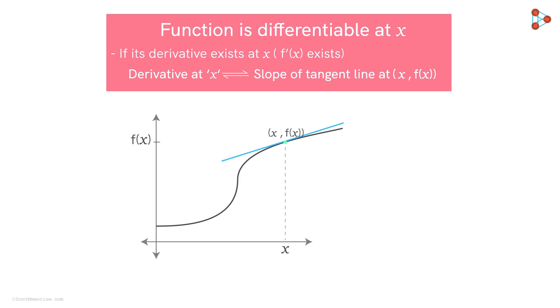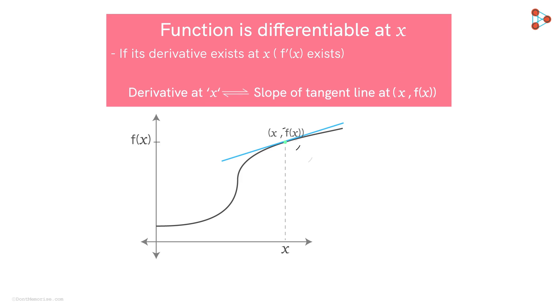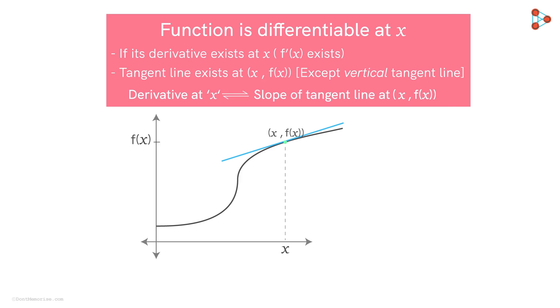So graphically, a function is differentiable at a point if a tangent line exists at that point on the curve, except only when it's a vertical tangent line. If it's a vertical tangent at a point, like here, then obviously the derivative does not exist at that point. Because we know the slope of a vertical tangent line, or any vertical line for that matter, does not exist.